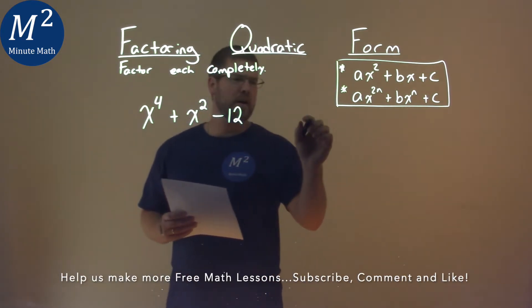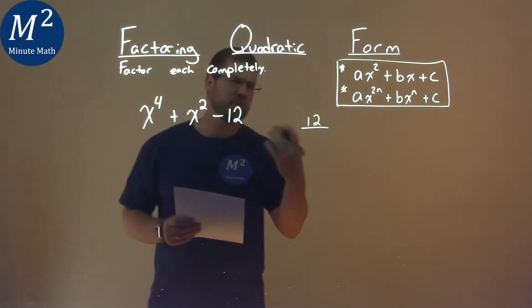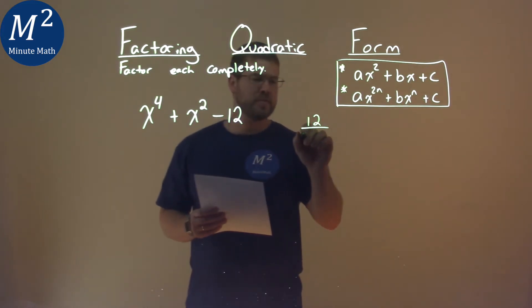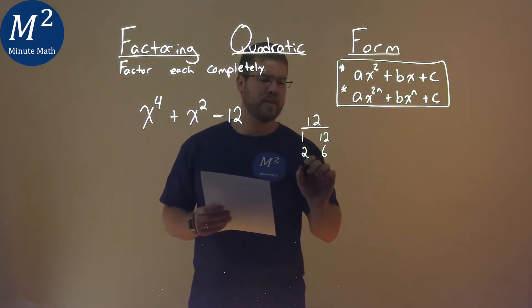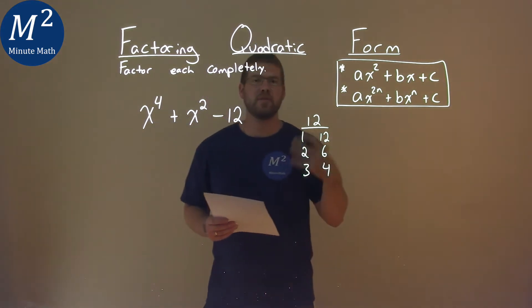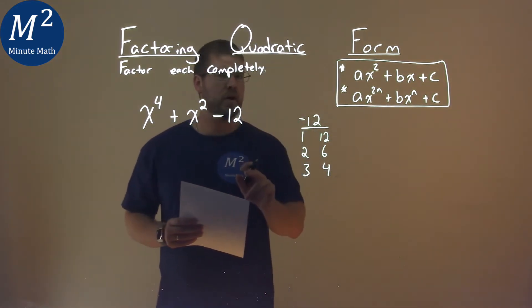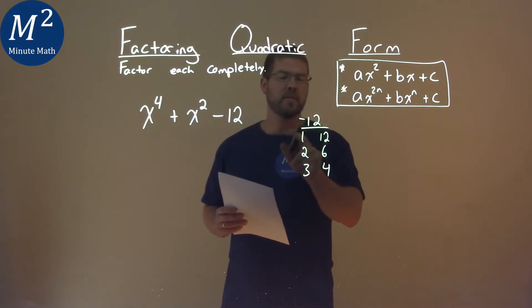We want to take our c value, that 12, and we find what two numbers multiply to be the 12. Well, it's 1 and 12, 2 and 6, and 3 and 4. Now, one of each one of these pairs has to be negative, because it's a negative 12, and one of these numbers has to be negative.